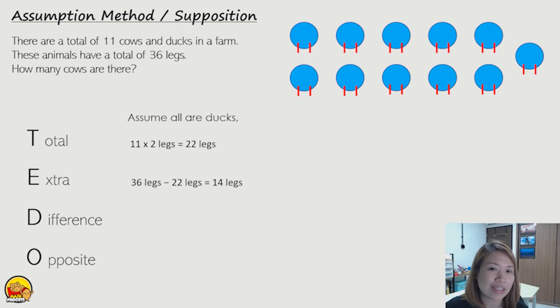So we still have 14 legs extra. So these are the extra legs. Okay. Now the third step. The difference.